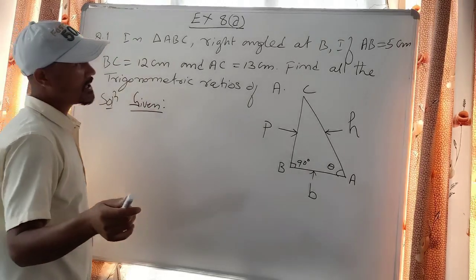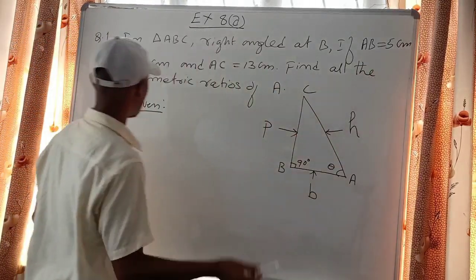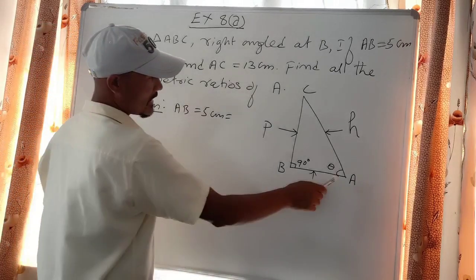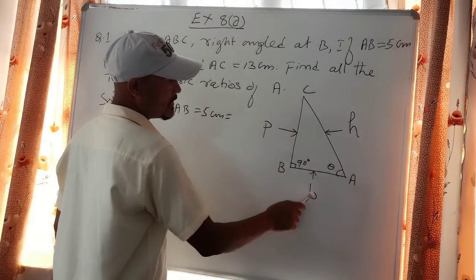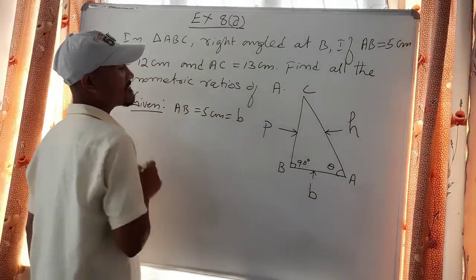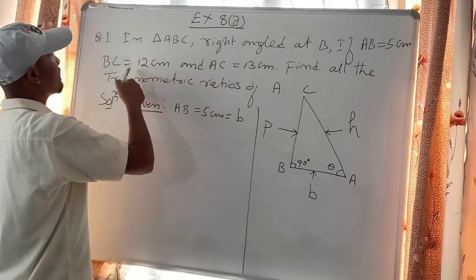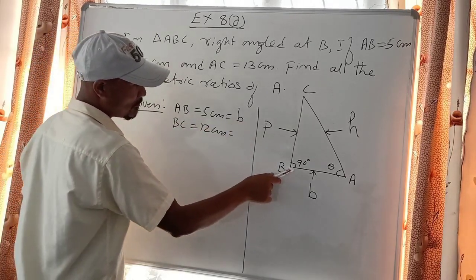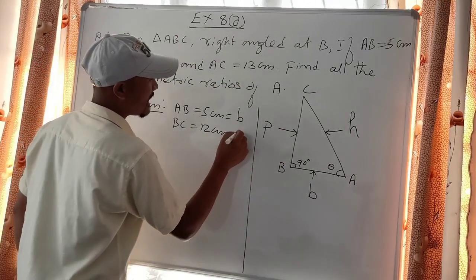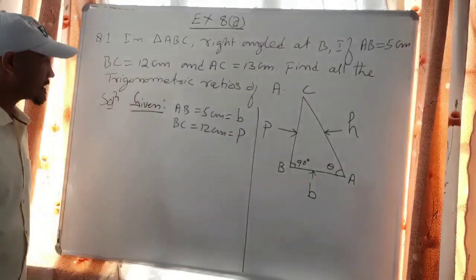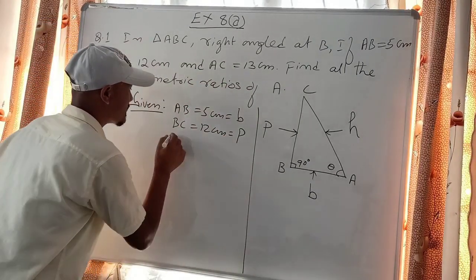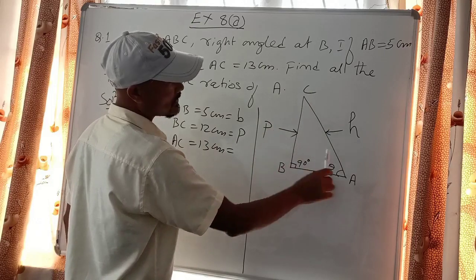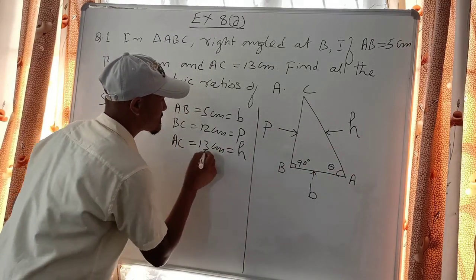What is given in the problem: AB is 5 cm, BC is 12 cm, and AC is 13 cm. The side AC, which is 13 cm, is the hypotenuse.